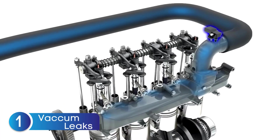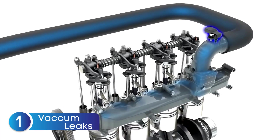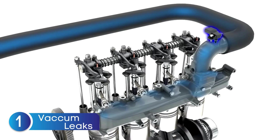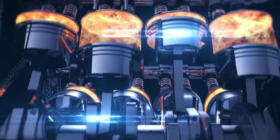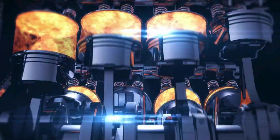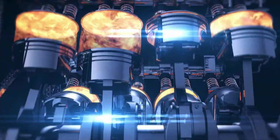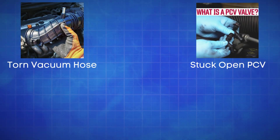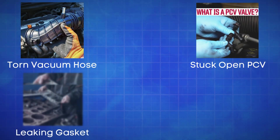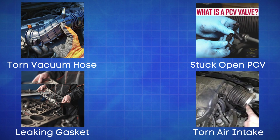First up, vacuum leaks. A vacuum leak allows unmetered air to enter the engine. This extra air throws off the air-fuel ratio, causing the mixture to run too lean, which leads to misfires. Some common locations for vacuum leaks include a torn vacuum hose, a stuck-open PCV valve, a leaking intake manifold gasket, or anything torn in the air intake system after the MAP sensor.